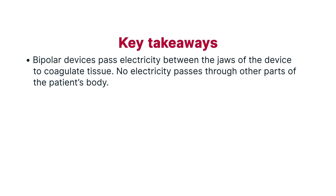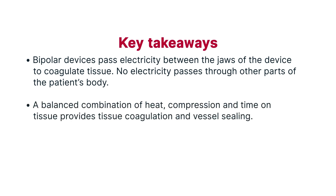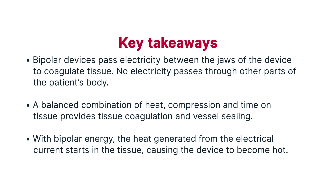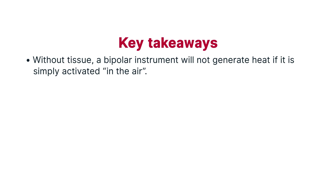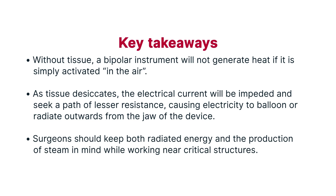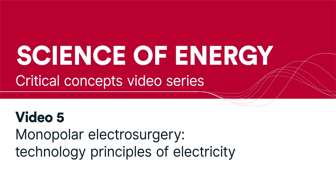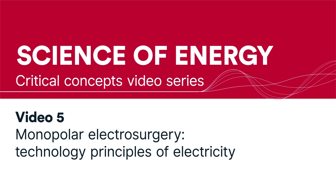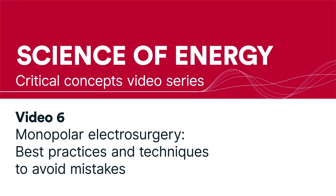Key Takeaways. Bipolar devices pass electricity between the jaws of the device to coagulate tissue — no electricity passes through other parts of the patient's body. A balanced combination of heat, compression, and time on tissue provides tissue coagulation and vessel sealing. With bipolar energy, the heat generated from the electrical current starts in the tissue, causing the device to become hot. Without tissue, a bipolar instrument will not generate heat if simply activated in the air. As tissue desiccates, the electrical current will be impeded and seek a path of lesser resistance, causing electricity to balloon or radiate outwards from the jaw of the device. Surgeons should keep both radiated energy and the production of steam in mind while working near critical structures. In the next two videos, we will explain monopolar electrosurgery — the first covering the basics of the technology and principles of electricity, and the second discussing best practices and techniques to avoid mistakes.